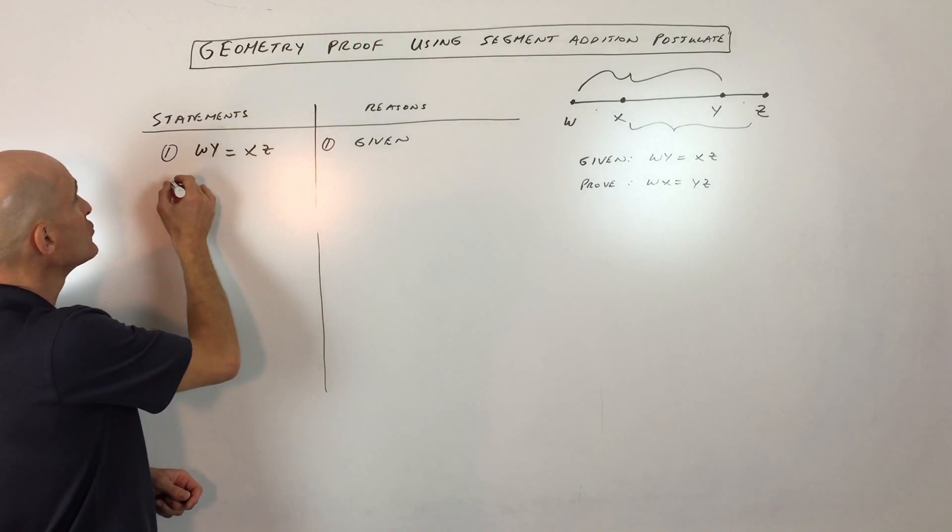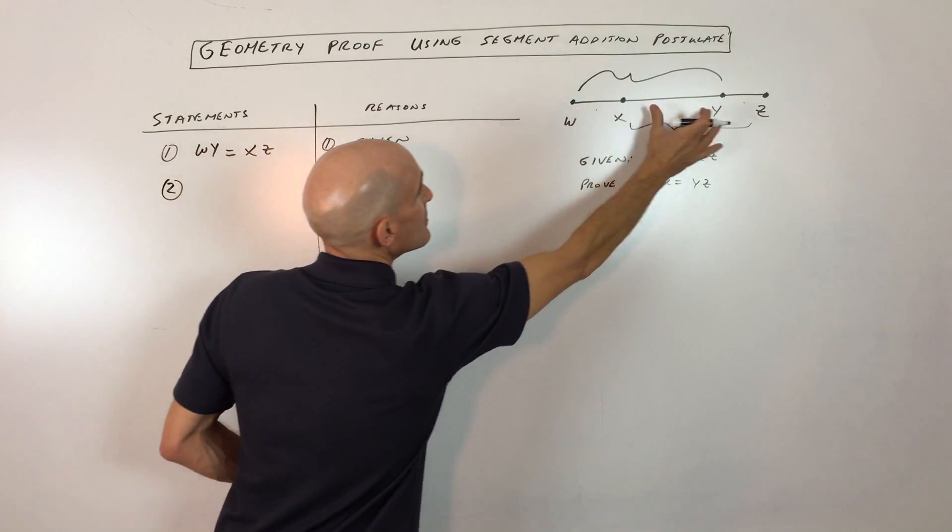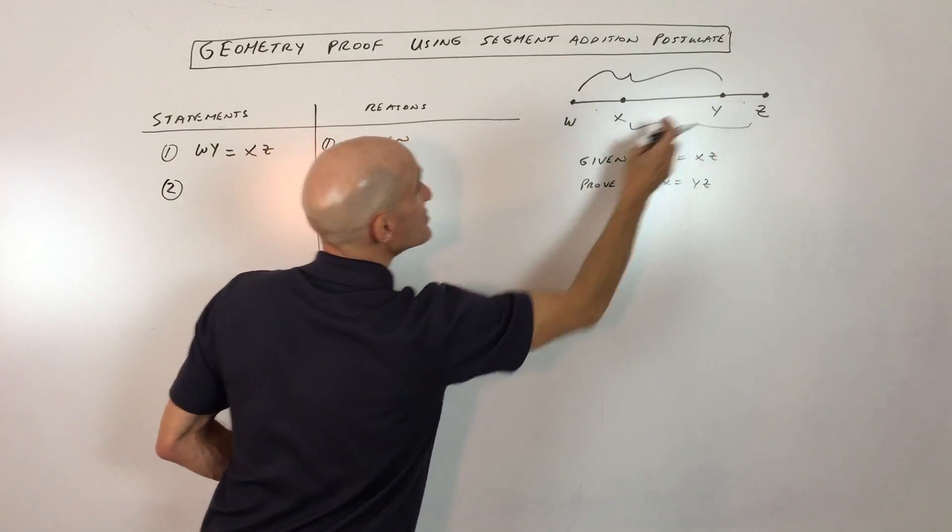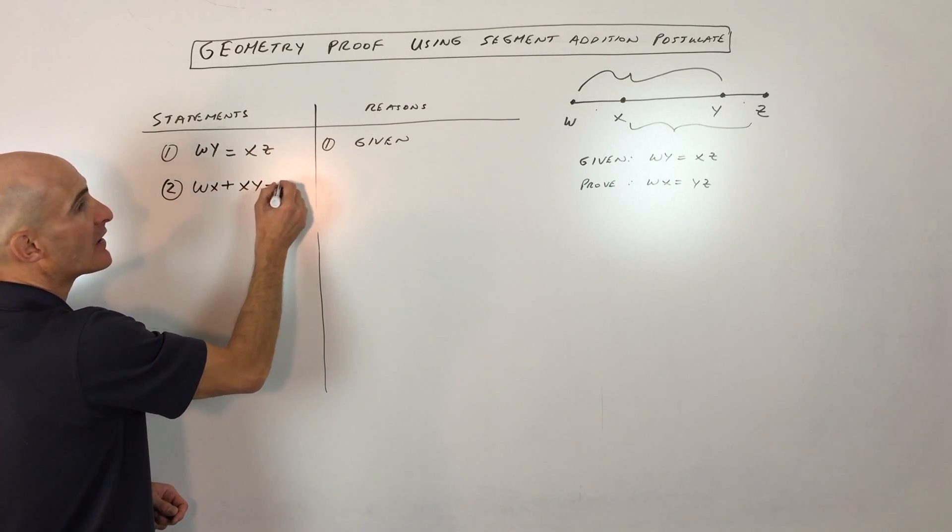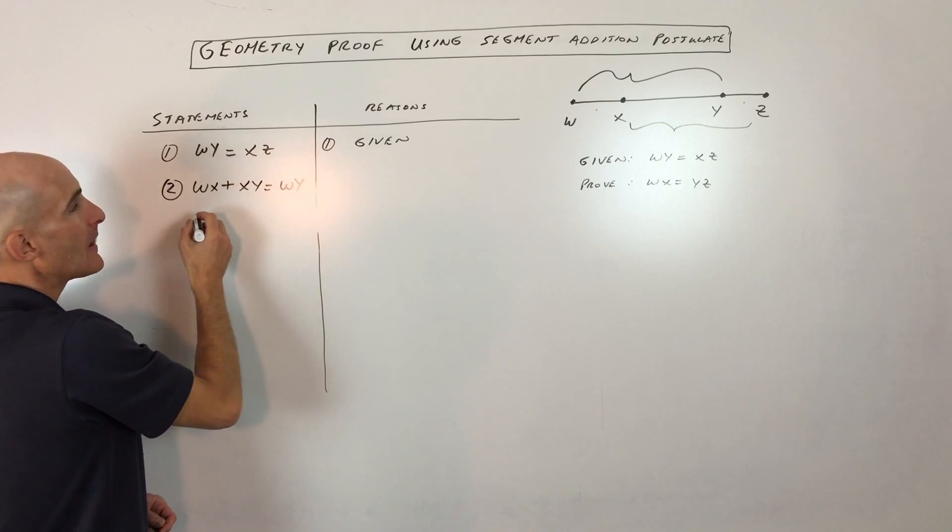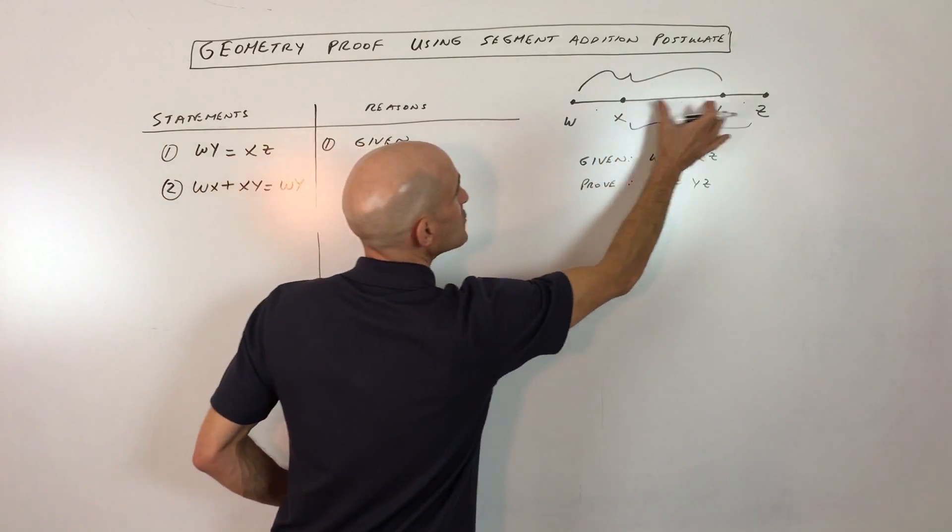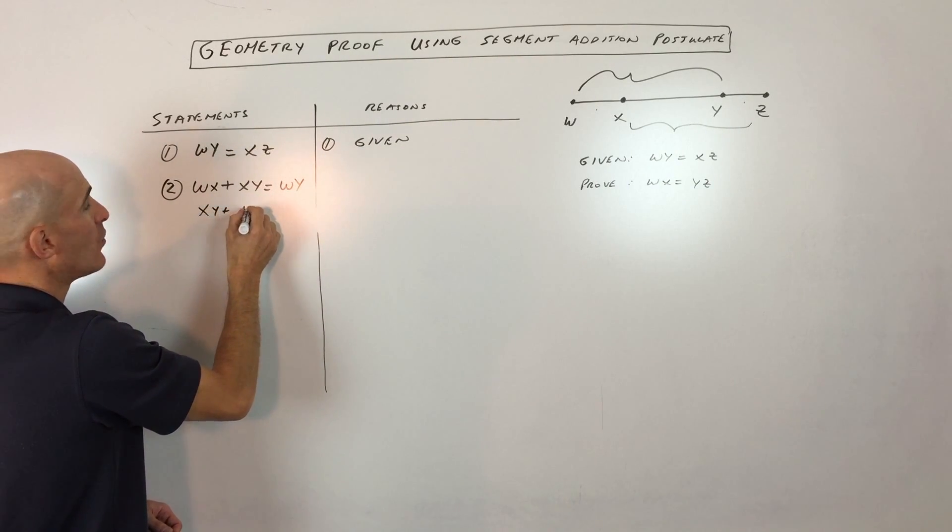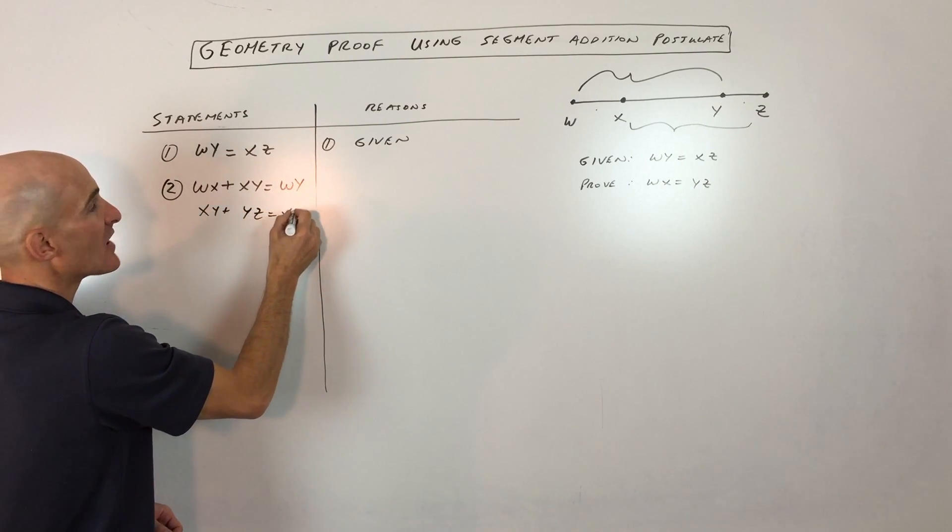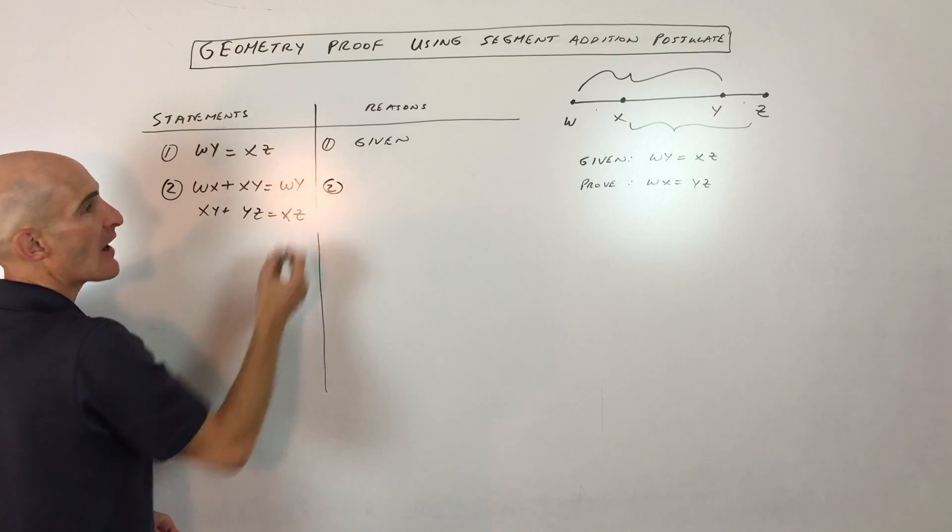So the first thing that I'm going to do here is I'm going to state that WX plus XY equals WY. And over here, we also have XY plus YZ equals XZ. And what's the reason for that? Well, that's called the segment addition postulate.